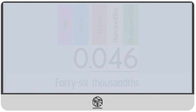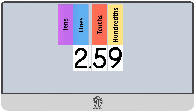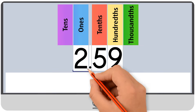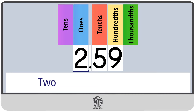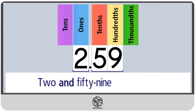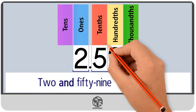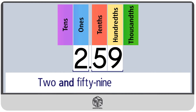Let's do another example. First, we write the whole number part: 2. Then, the decimal point turns into the word AND. So we have 2 AND. Now move on to the decimal part of the number. We write the decimal part in the same way that we would write a whole number, so we have 59. Now take a look at the place value of the last digit. The last digit is 9, and it's in the hundredths place. So we write 2 and 59 hundredths.